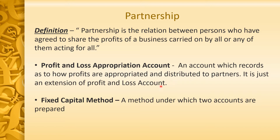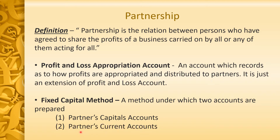One more main account that is prepared here is under the Fixed Capital Method. In the Fixed Capital Method, two accounts are manually prepared. First, Partner Capital Account; then second, Partner Current Account. The Partner Capital Account is prepared only with the actual capital of the partner. The Partner Current Account includes all profit sharing ratios and expenditures.